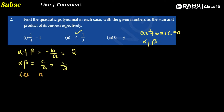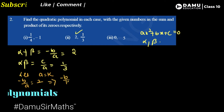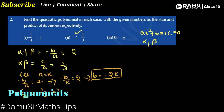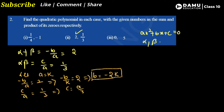Let a be equal to some constant k. Then minus b by a equals 2, which implies minus b by k equals 2, so b equals minus 2k. Then c by a equals 1 by 3, which implies c equals a by 3, that is c equals k by 3. So these are the expressions for the a, b, and c values.